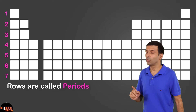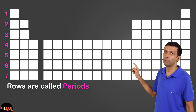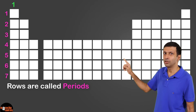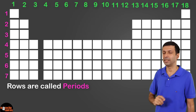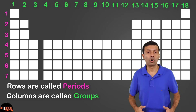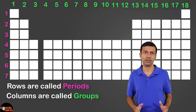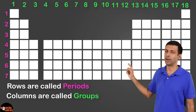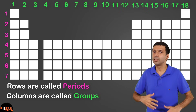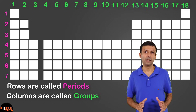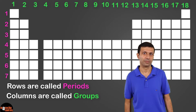Similarly, we can number the columns. The column number is going to be 1, 2, 3 and all the way up to 18. Columns are called groups in the periodic table, so these are our group numbers. There is a different numbering scheme for groups as well, but we'll look at that later on in the video.